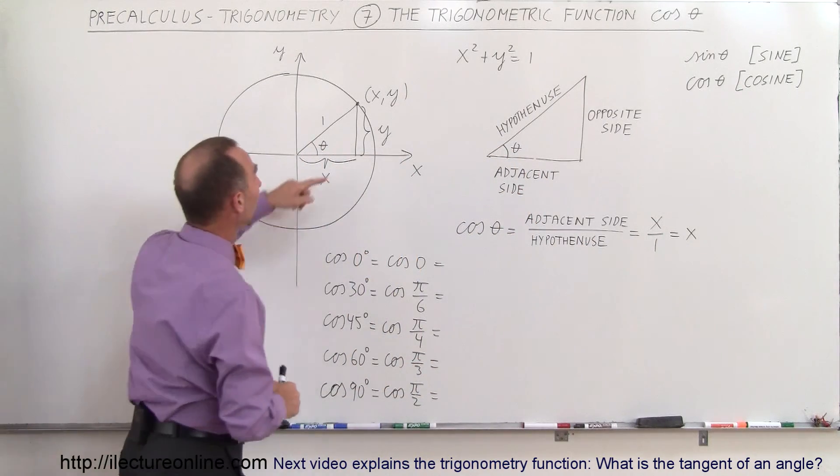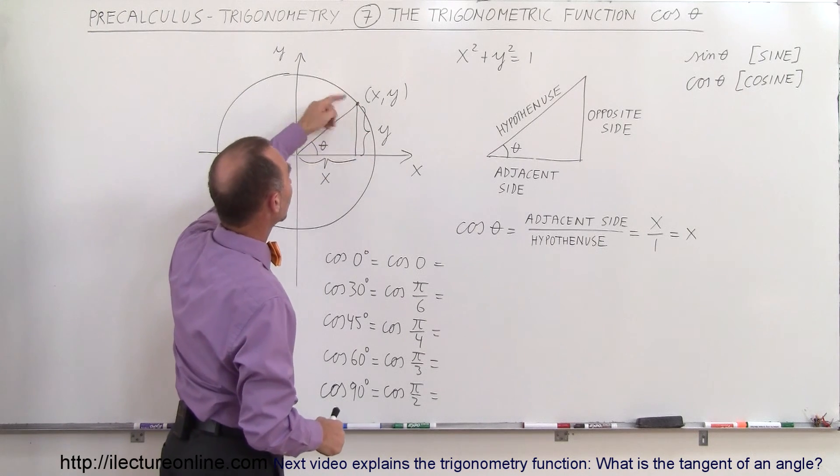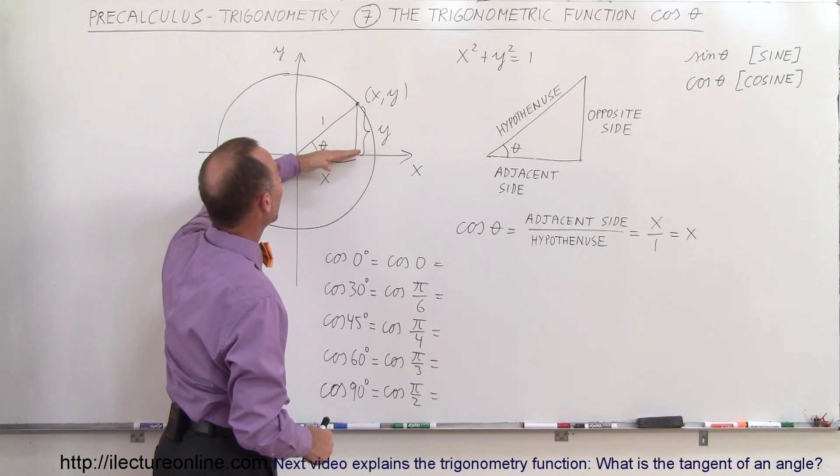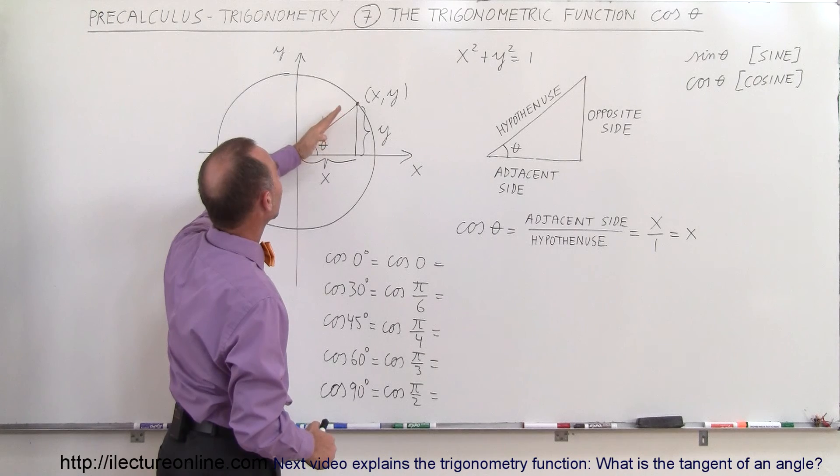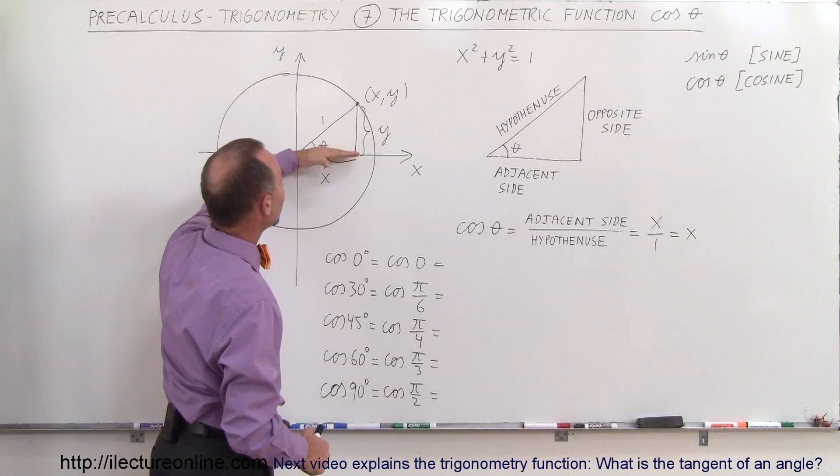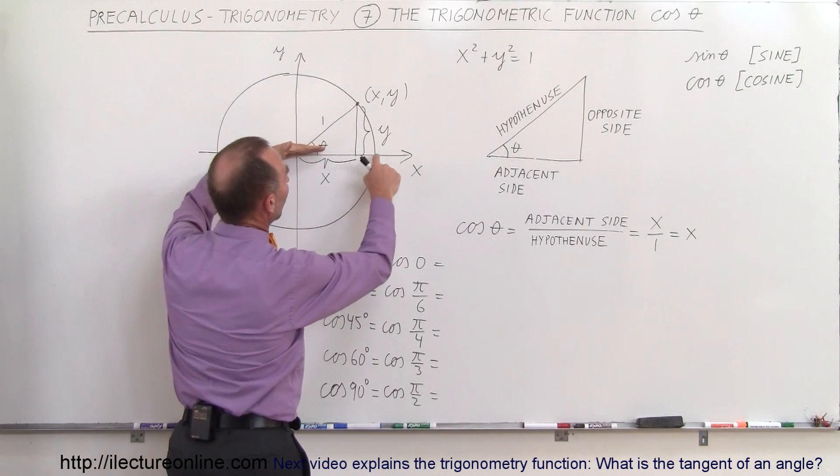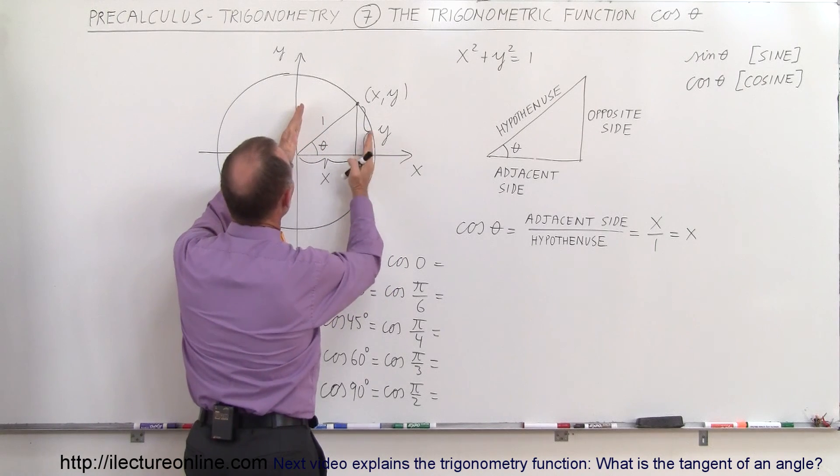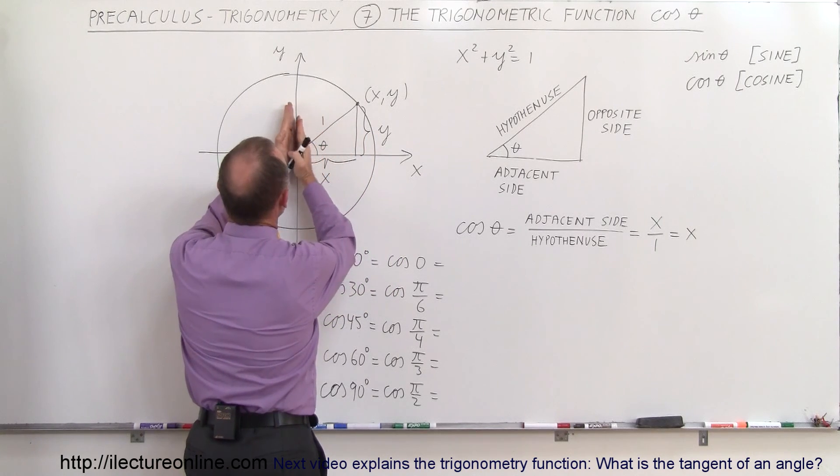It's the x-value of the point on the unit circle, depending upon where the hypotenuse points to, depending upon the size of the angle. Notice, when the angle is small, x is a large value. When the angle becomes large, x becomes a smaller, smaller, smaller value.